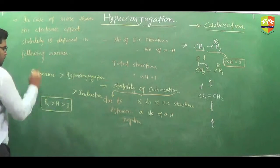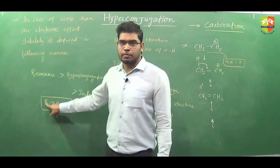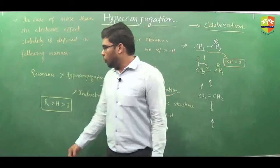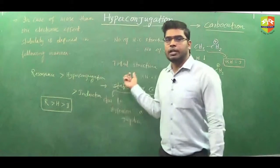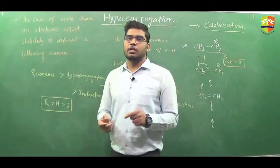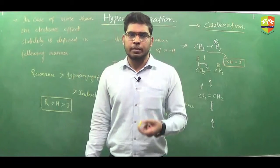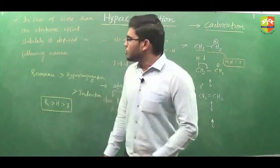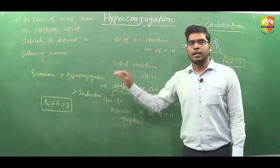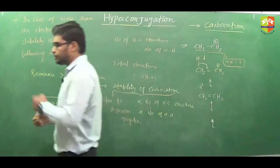When a molecule has more than one electronic effect — if resonance is there, then the stability of carbocation is maximum; then we consider hyperconjugation, and then inductive effect. When two molecules are given — one showing resonance and the other showing hyperconjugation — then obviously the resonance molecule will give the more stable carbocation. Now we will see a few examples on this and apply these concepts to determine the stability of carbocation.